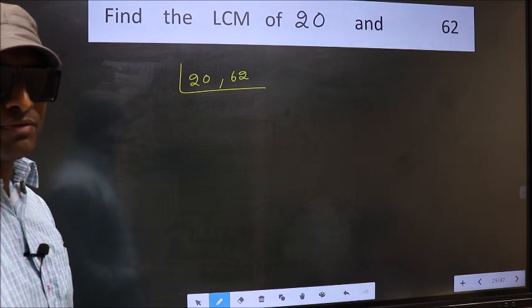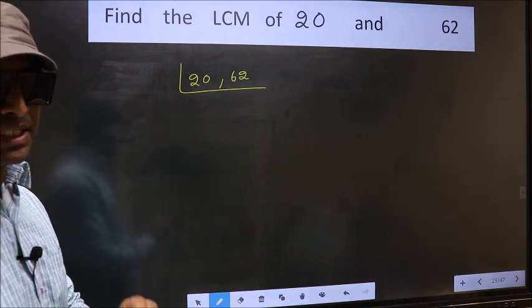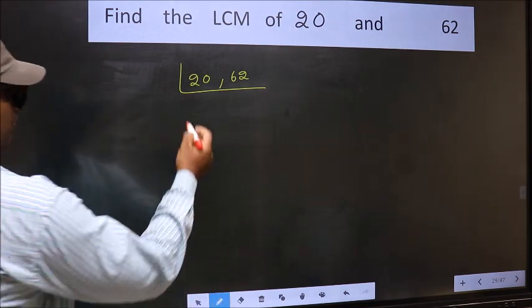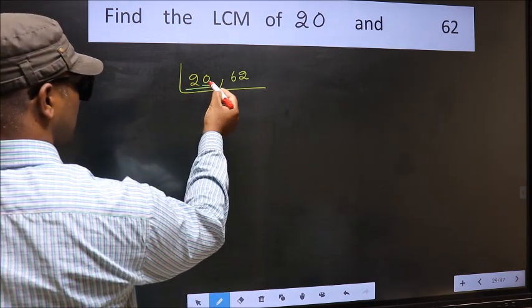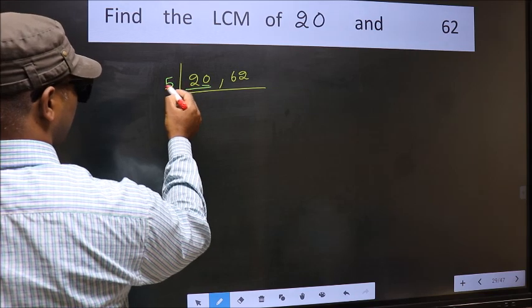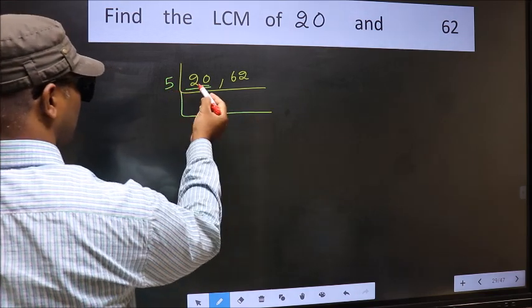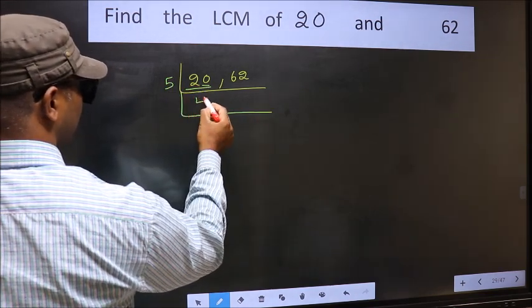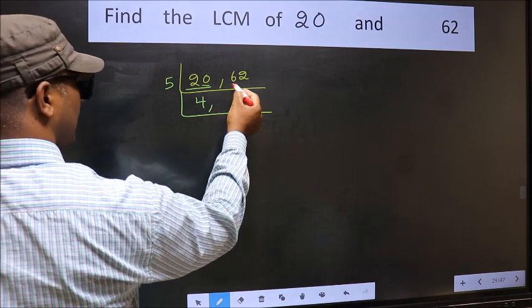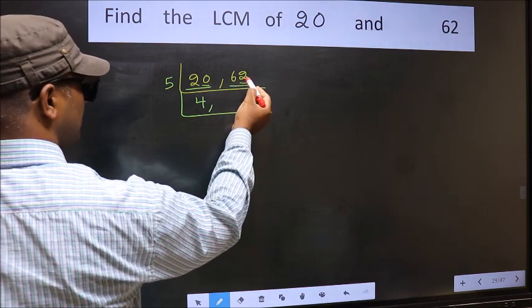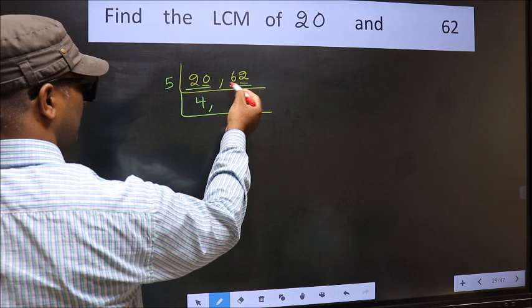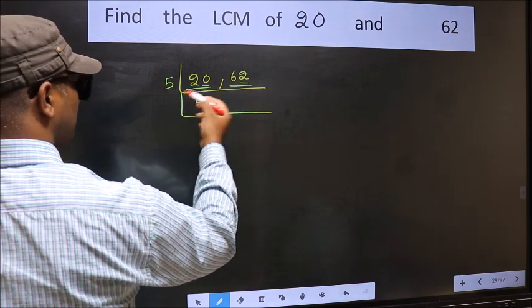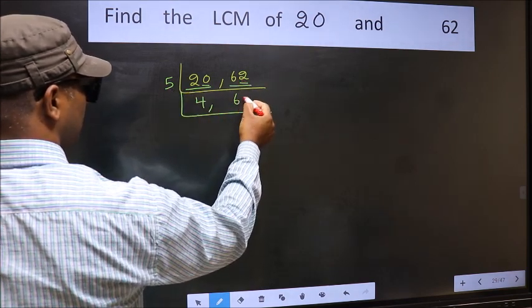Now you should focus on the first number which is 20 here. For this number last digit 0 so directly take 5. When do we get 20 in 5 table? 5 goes into 20. The other number 62 last digit neither 0 nor 5. So this is not divisible by 5. So you write it down as it is.